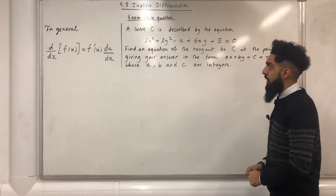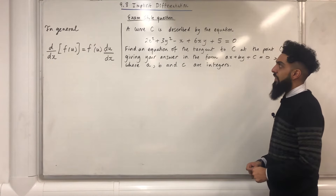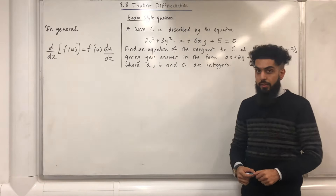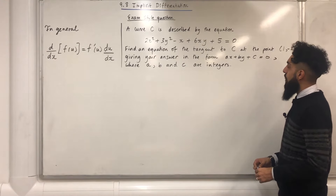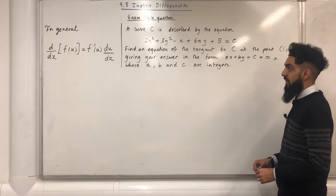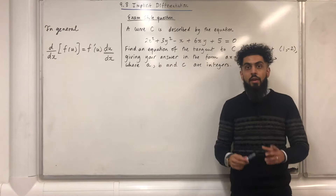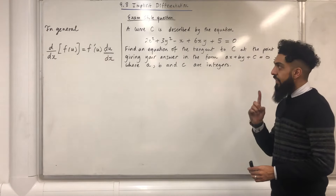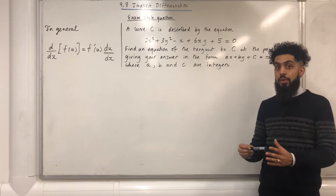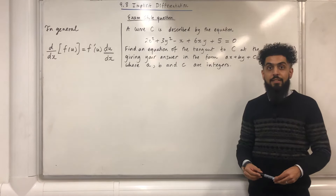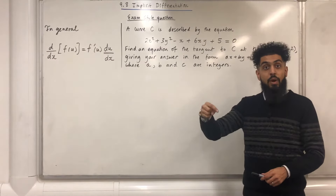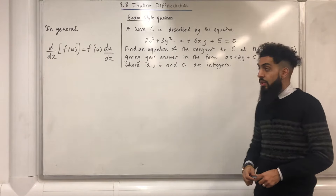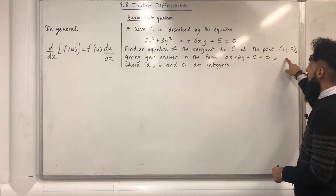Here's an exam-style question. A curve C is described by the equation 2x squared plus 3y squared minus x plus 6xy plus 5 equals 0. Find an equation of the tangent to C at the point (1, −2), giving your answer in the form ax plus by plus c equals 0, where a, b, and c are integers. First, we need to find dy over dx, which is also called the gradient function. Once we have dy over dx, we can substitute x equals 1 and y equals minus 2 to give us the gradient of the tangent to the curve C at the point (1, −2).